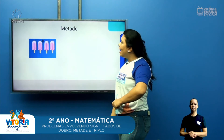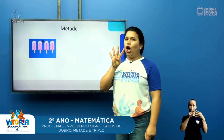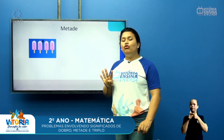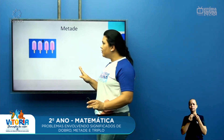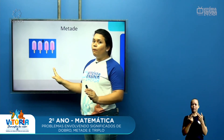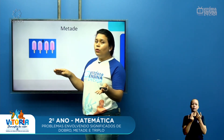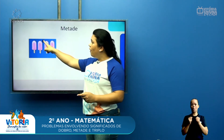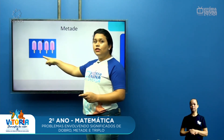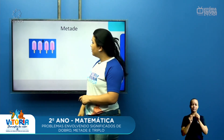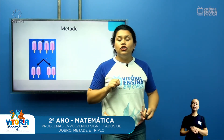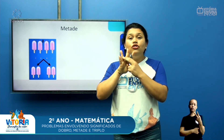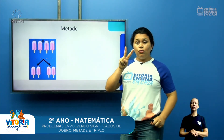Metade: eu tenho quatro picolés e eu quero dividir esses picolés no meio. Como é que eu faço? Eu vou ter que sair dividindo, para que fique igual. Uma quantidade igual de picolés para um lado, uma quantidade igual de picolés para o outro. Se eu dividir, vai ficar dois para cada lado. A metade de quatro é dois.